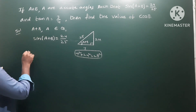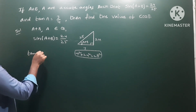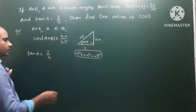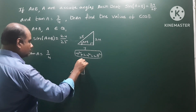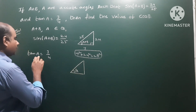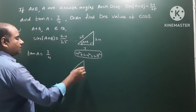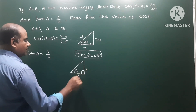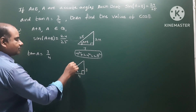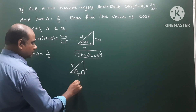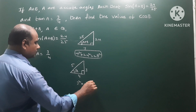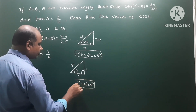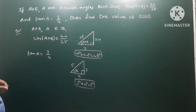For tan(A) = 3/4, we draw another right angle triangle with angle A. tan(A) = opposite side by adjacent side = 3/4. The hypotenuse is 5, since 3² + 4² = 5². These are the 3-4-5 Pythagorean triples. So we have cos(B).